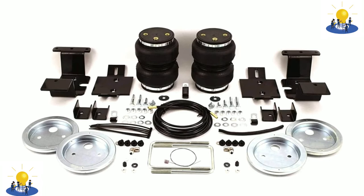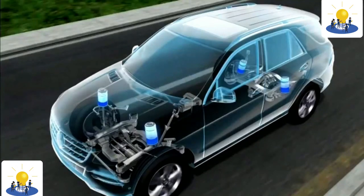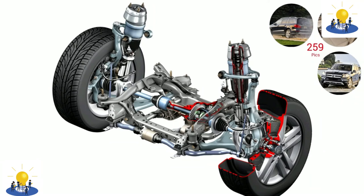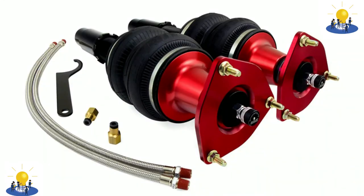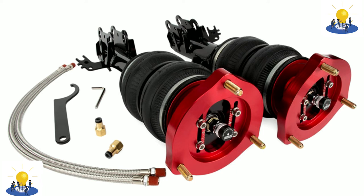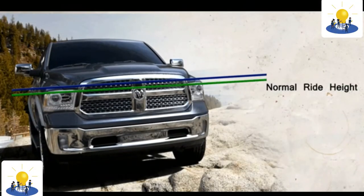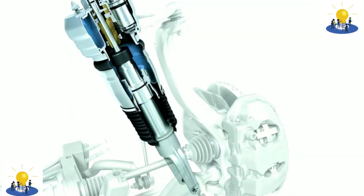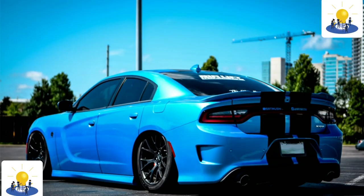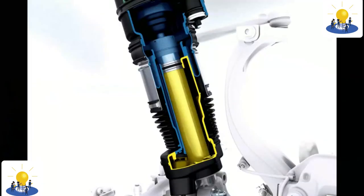Jaguar and Porsche have taken this to the next level on their XJ and Panamera models, with a system that changes the spring rate and damping settings for their sport/track modes. One way automakers strive to improve gas mileage is by utilizing active suspension technology. Tesla Motors offers an active air suspension on the Model S and Model X to lower or raise the vehicle for aerodynamics and increased range.